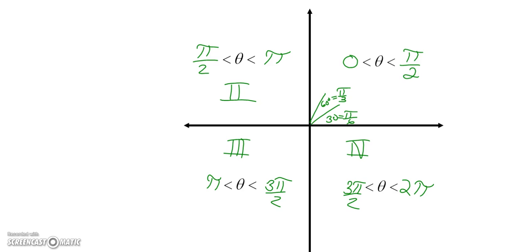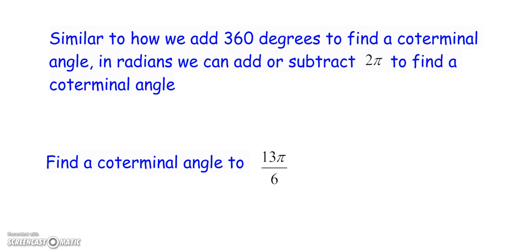So we already know that our initial side is always going to be an arrow pointing to the right. And any angle drawn off it, it depends on its size, will fall into these four quadrants, or possibly on either the x-axis or the y-axis. But we'll get into that later on.